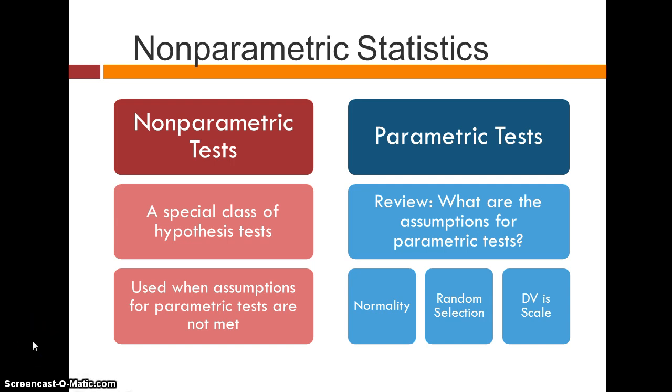So before we move forward, let's remember what our assumptions are for the parametric tests. The first is we can assume that the distribution of scores in the population, the underlying distribution for our sample, is normal.